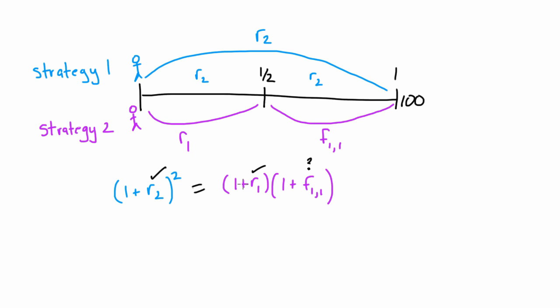This is the basis of expectations theory. The idea that if two strategies have identical levels of risk and identical payoffs, then the rates of return of the two strategies have to be the same. We don't know what the forward rate one period in the future will be, but under expectations theory, this relationship has to hold.